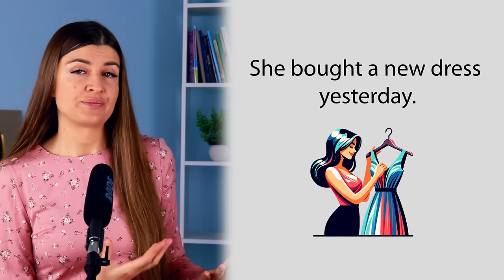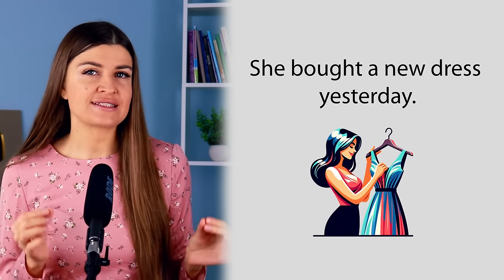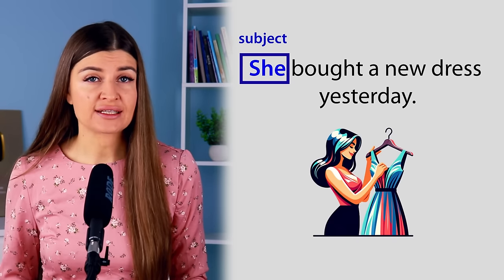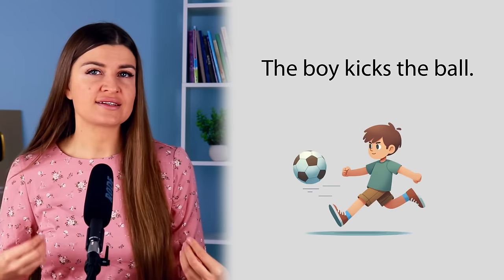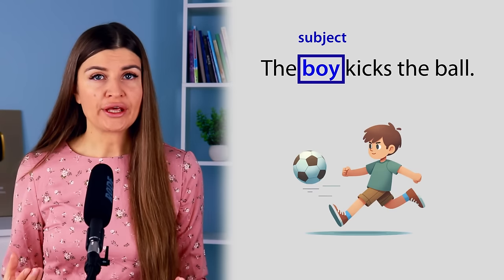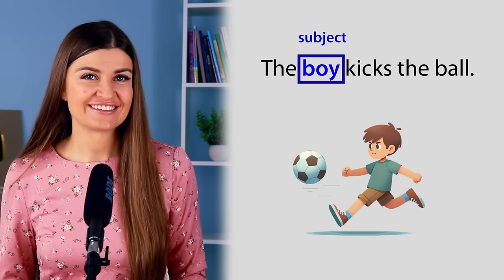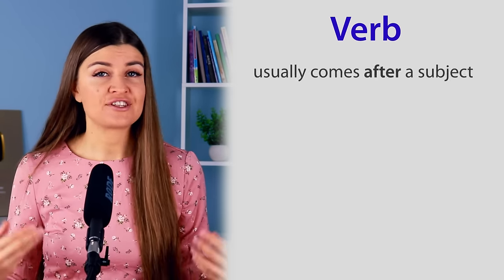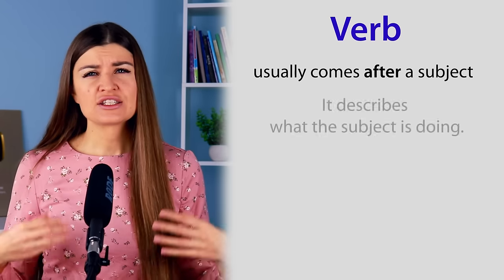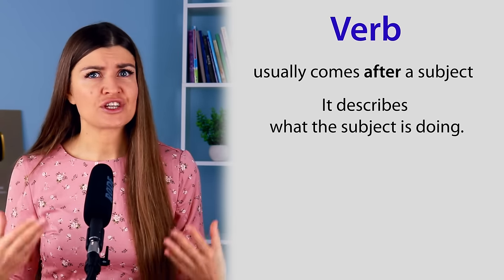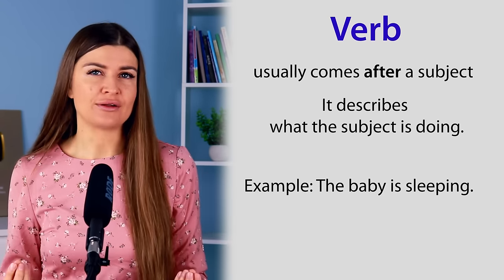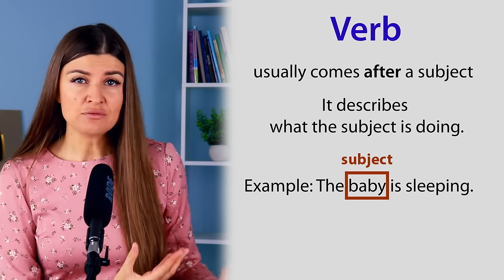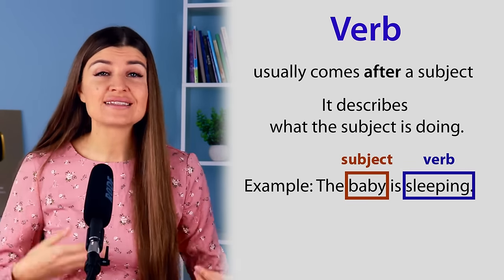Take a look at this sentence: She bought a new dress yesterday. In this sentence, she is the subject. The boy kicks the ball — the boy is the subject. Then we have a verb. A verb usually comes after a subject and it describes what the subject is doing. For example, the baby is sleeping. The baby is the subject; sleeping is the verb.